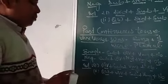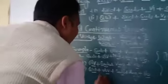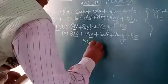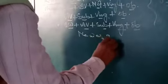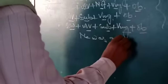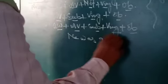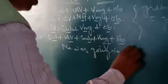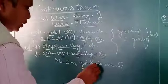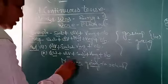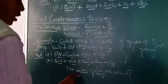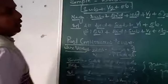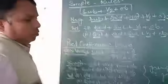For example: 'He was going to school.' Here 'he' is the subject, 'was' is the auxiliary verb, and 'going' is the verb in ing form. From this you can write past continuous questions.